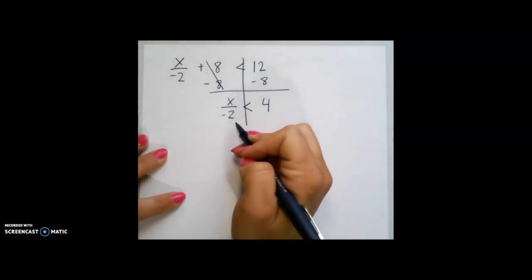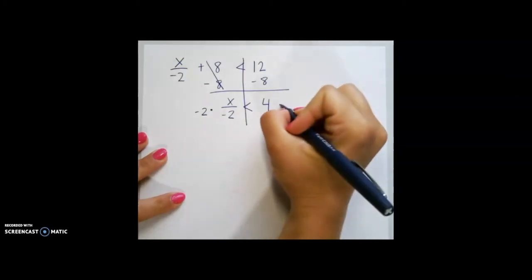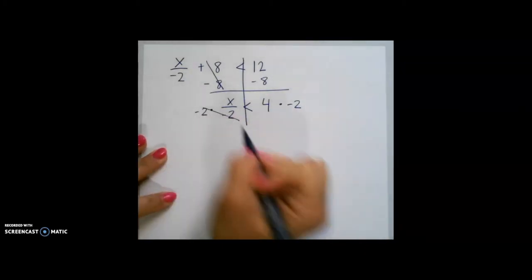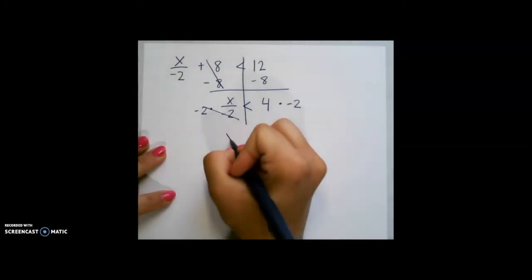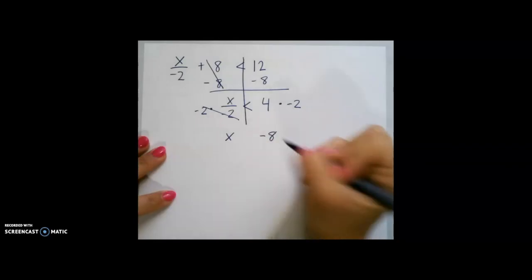X divided by negative 2, the inverse of that, is to multiply by negative 2 on both sides. This is going to cancel out over on the left and leave us with x. 4 times negative 2 is negative 8.